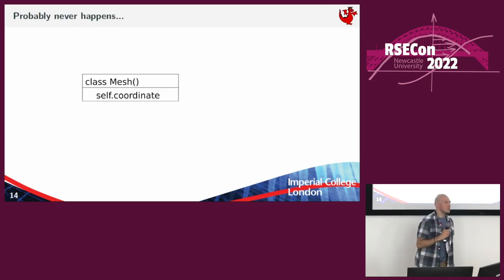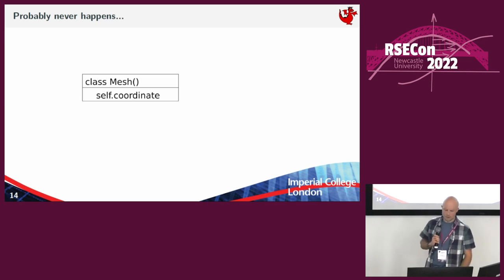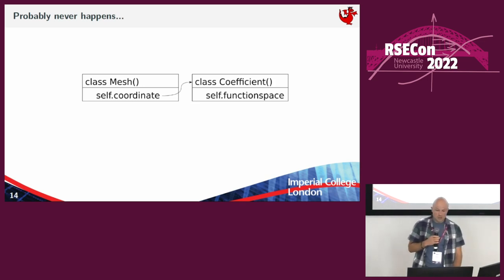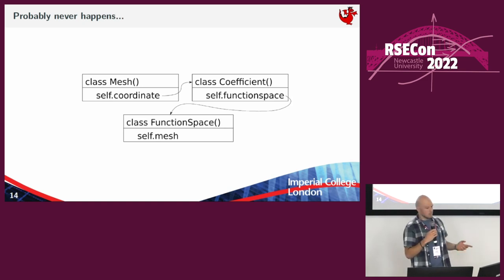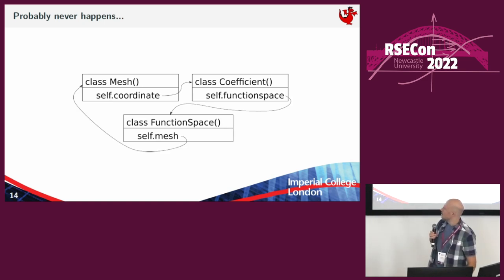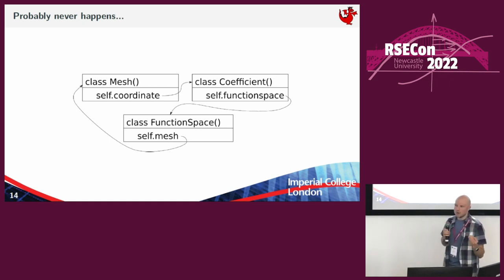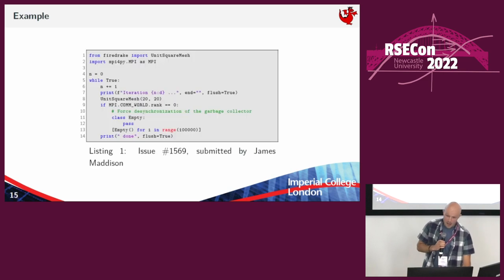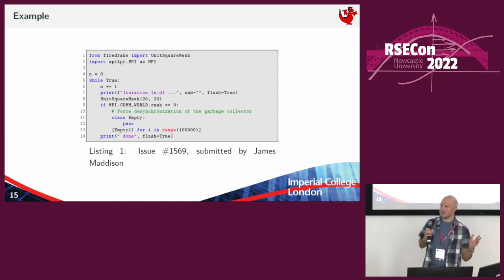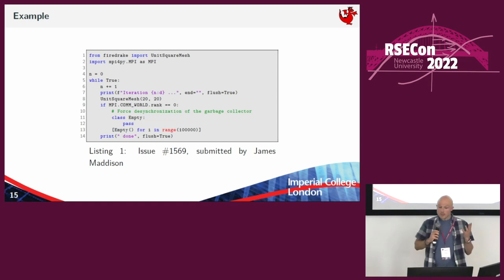This doesn't happen only in artificial examples. Actually, one of the very fundamental objects we need for continuum mechanics simulations — a mesh — has an attribute which is a coordinate, and that coordinate is a class coefficient. A coefficient has to live in a function space, and a function space belongs to a mesh, and the natural choice of mesh is the original one we're forming the problem on. So all of a sudden this very fundamental structure is a reference cycle. This was pointed out by one of our users who said they had an issue where creating a mesh was causing deadlock.